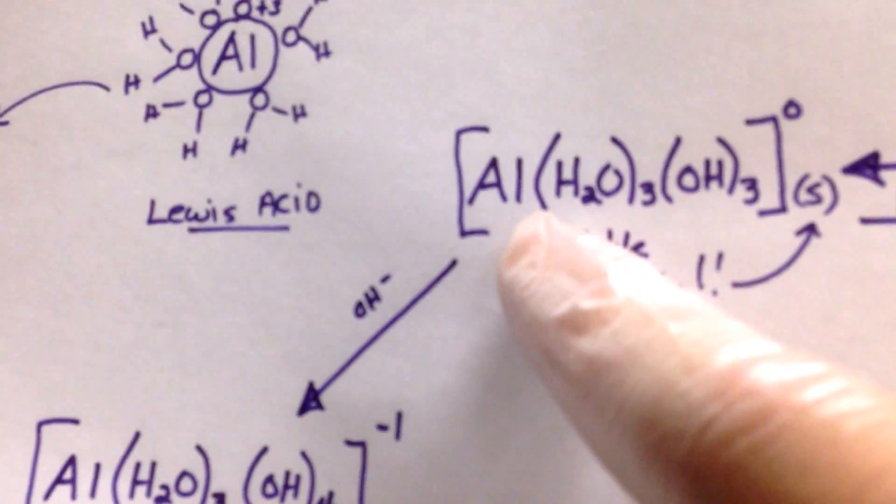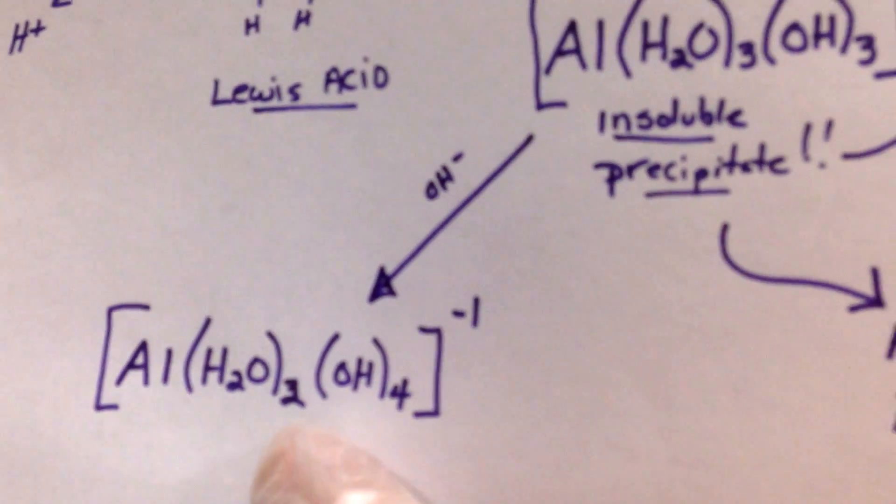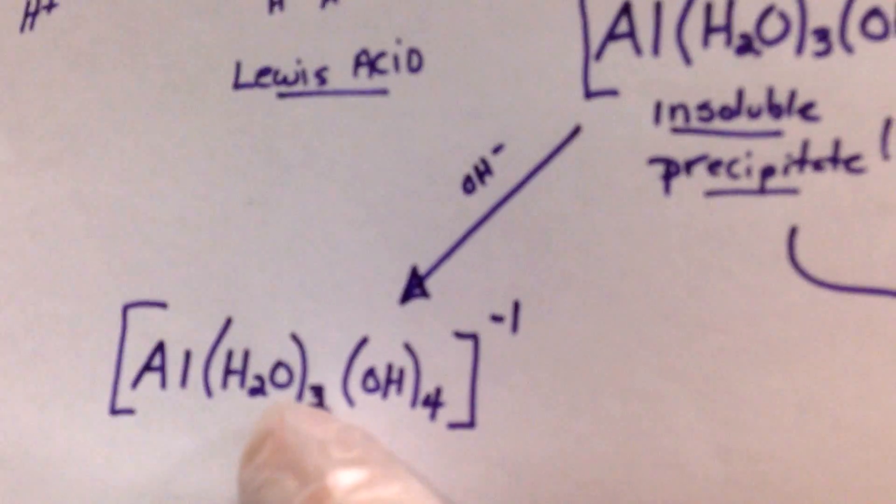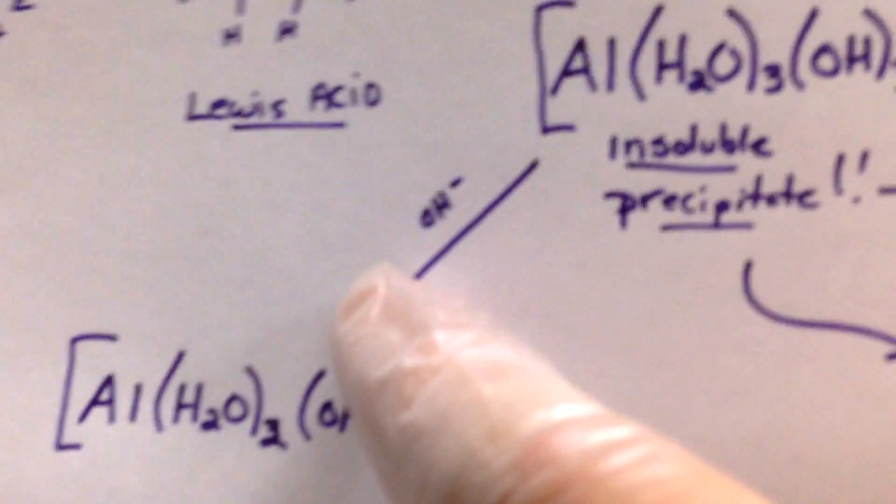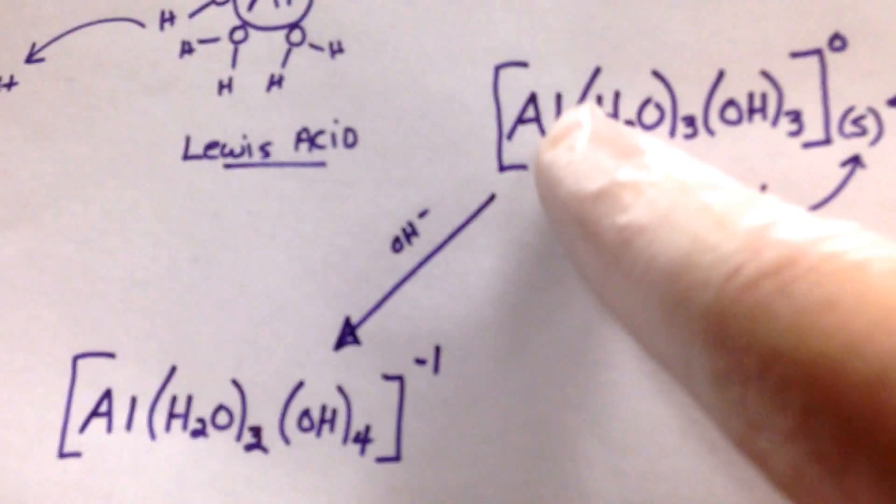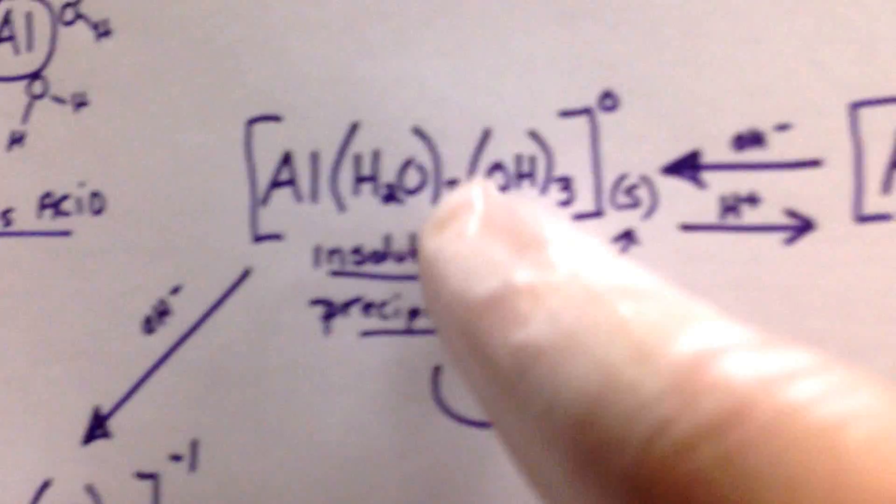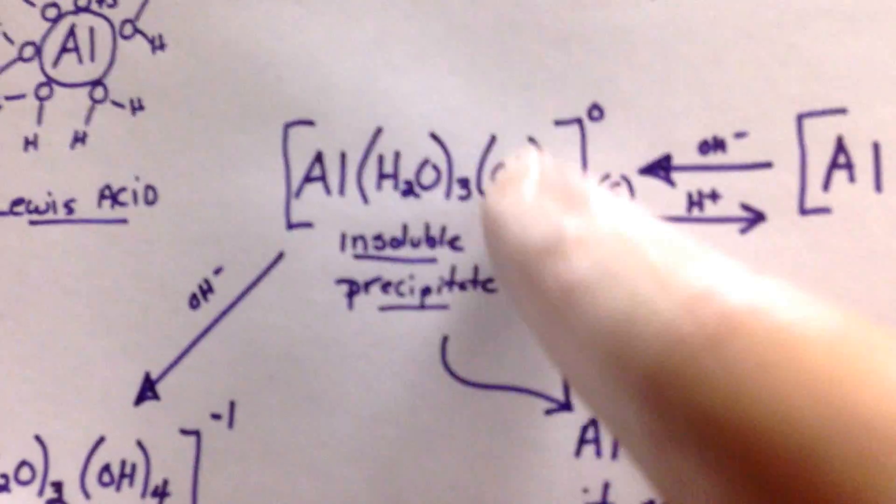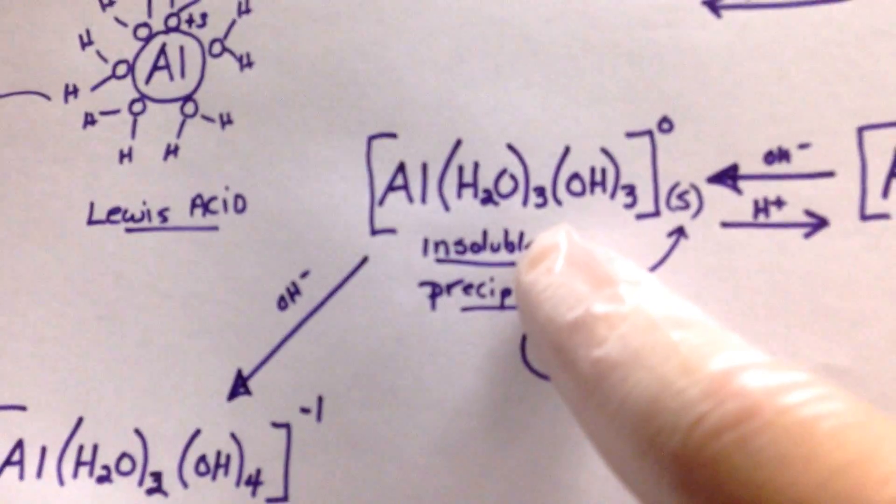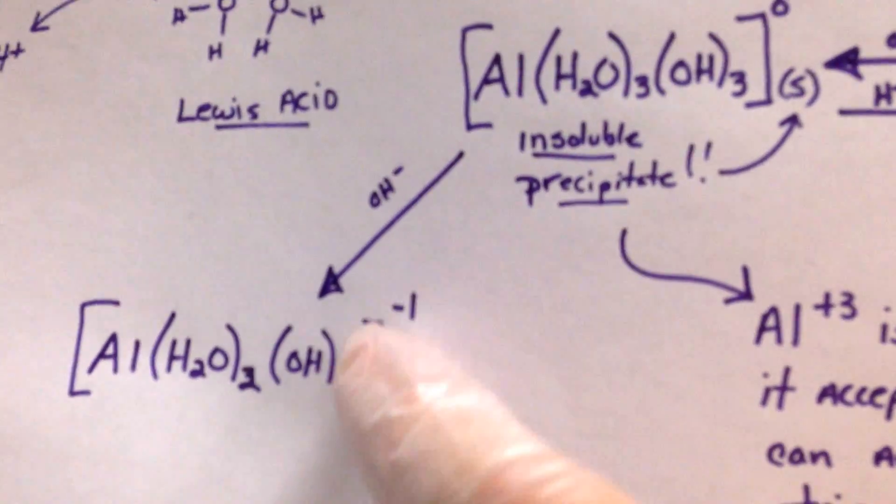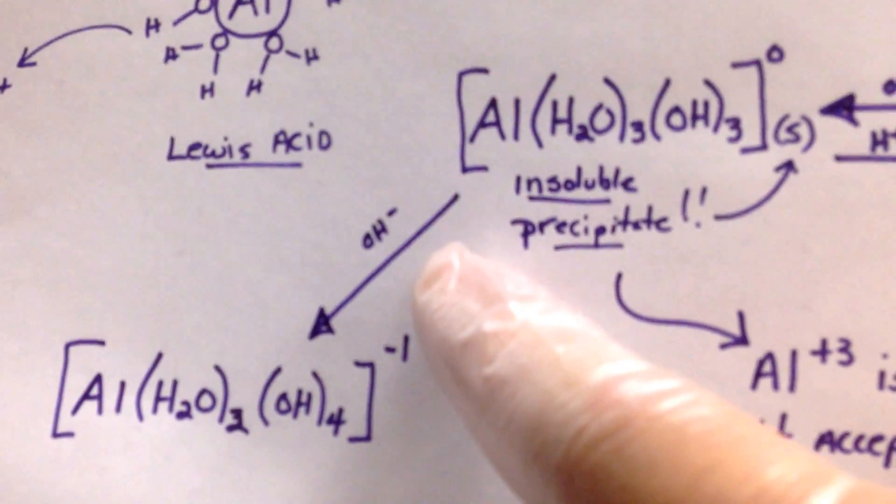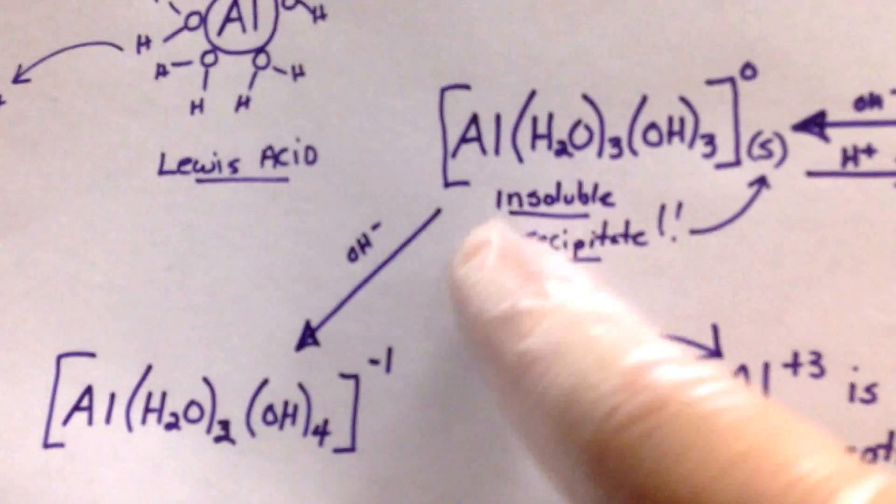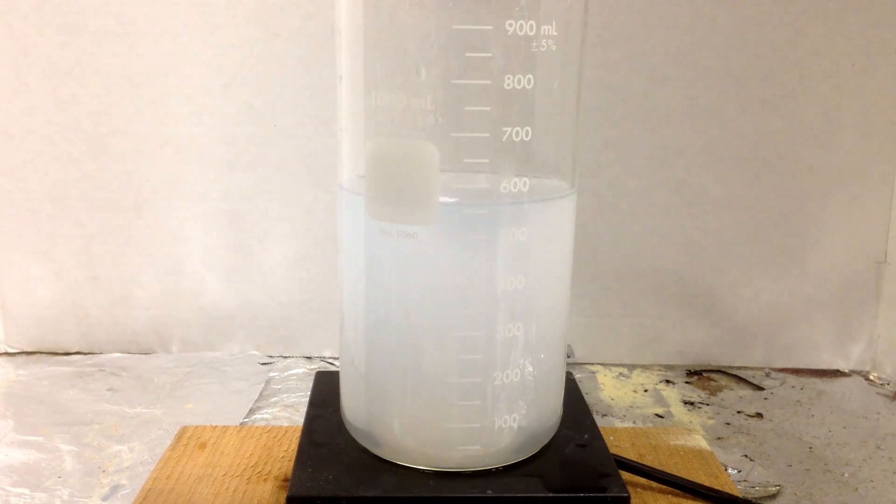That's where it's amphoteric. It can be affected by a base. If this is pulling off an H, it's acting as an acid here. This one is donating a proton to the hydroxide and acting as an acid. So this can act as an acid in the presence of the hydroxide. It can act as a base in the presence of an H+. This is what makes it amphoteric. If you can take this insoluble compound and add more base to dissolve it, then you have an amphoteric ion.